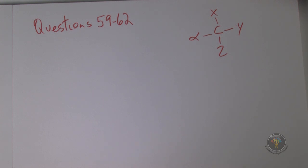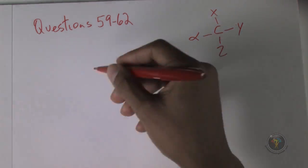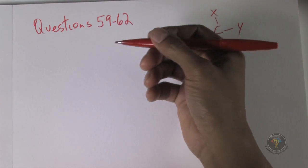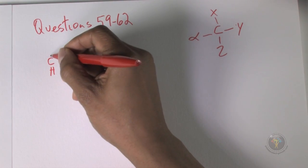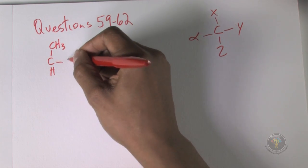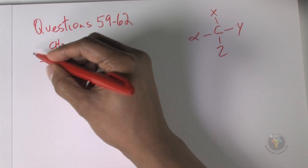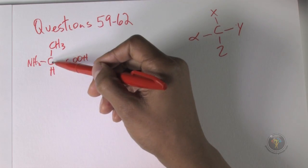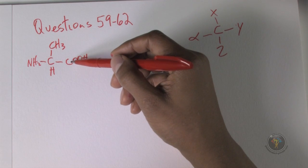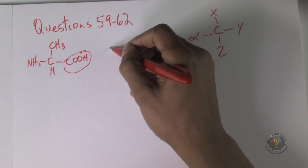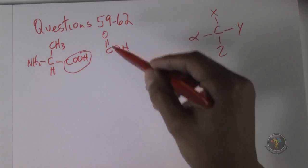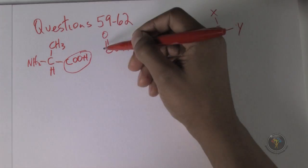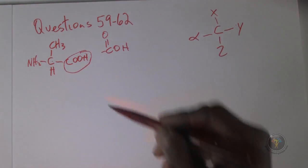Question 60. Again we're looking for chiral carbons with four different bonds. The first molecule is an amino acid — it has an amino group and a carboxylic acid group. It has a hydrogen, a CH3, a carboxylic acid group, and an NH2 attached to the central carbon, giving it four different groups. The carboxylic acid carbon itself is bonded twice to oxygen, so it's clearly not chiral — only the central carbon is chiral.